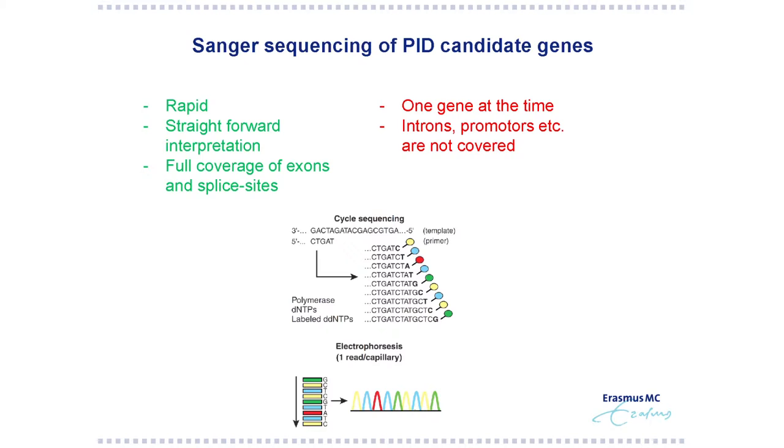I will start with Sanger sequencing of single PID candidate genes — as in the case I gave, you sequence only one gene. The advantage is it's rapid and straightforward, the interpretation is straightforward, and with this approach you're sure that you sequence everything, because you evaluate every nucleotide. You sequence all exons and the splice sites.